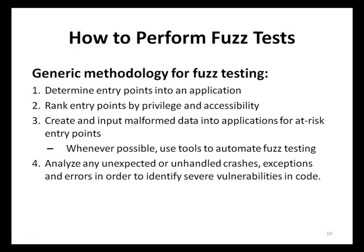Any unexpected or unhandled crashes to an application caused by processing malformed data should be rigorously analyzed by developers and testers. Error conditions created from processing malformed data often indicate the presence of severe code vulnerabilities. Finally, vulnerabilities should be fixed and then tests should be executed again to better ensure the vulnerability is fixed. It is also important to rerun tests since a specific crash may be blocking other issues from showing up until after it gets resolved.